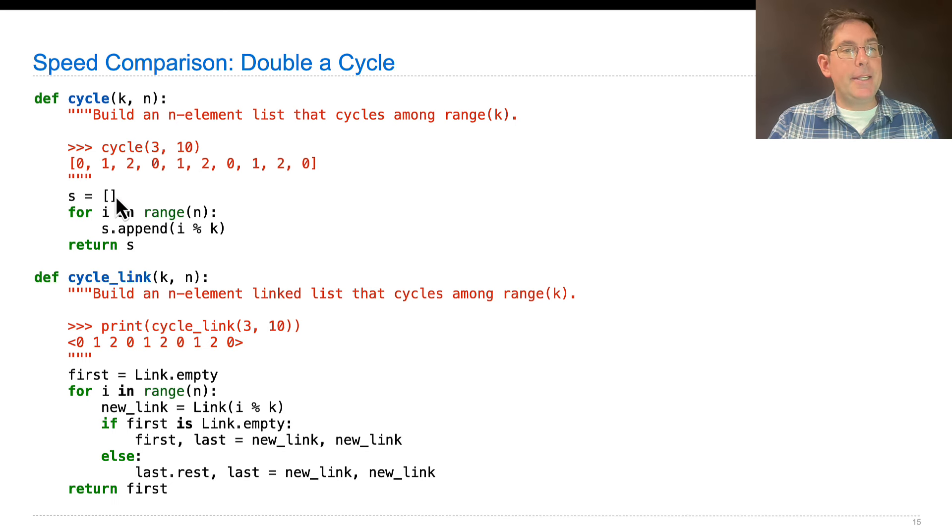Here's the code: empty list, go through all the i's in that range, and we'll use the remainder or modulo operator in order to go from 0 to 1 to 2 and then back to 0 again. Append is built in with lists, so this is easy to write.